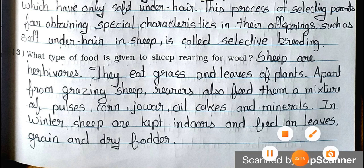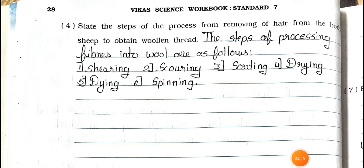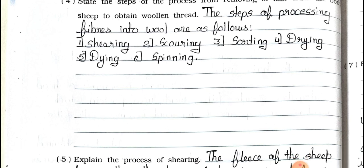Now we will see the next page. Question number 4: State the steps of the process from removing hair from the body of a sheep to obtain woolen thread. Answer: The steps of processing fibers into wool are as follows — 1. Shearing, 2. Scouring, 3. Sorting, 4. Drying, 5. Dyeing, 6. Spinning.